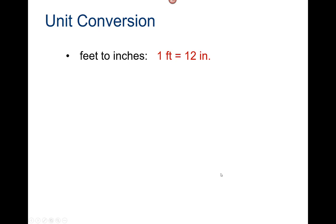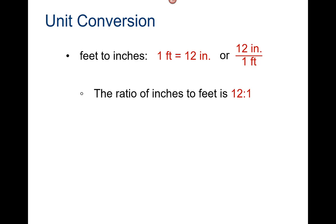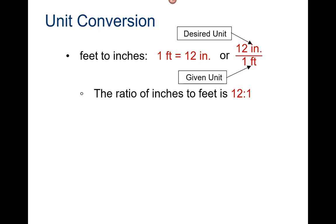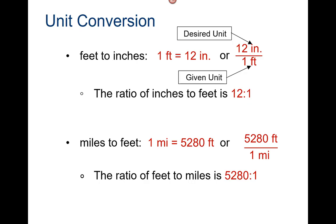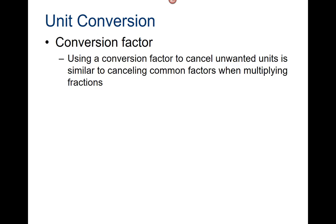Unit conversion — feet to inches. One foot equals twelve inches. The ratio of inches to feet is twelve to one. We have the desired units, inches, and the given units that we are converting. Miles to feet: one mile equals five thousand two hundred and eighty feet, or five thousand two hundred and eighty feet over one mile. The ratio of feet to miles is five thousand two hundred and eighty to one.